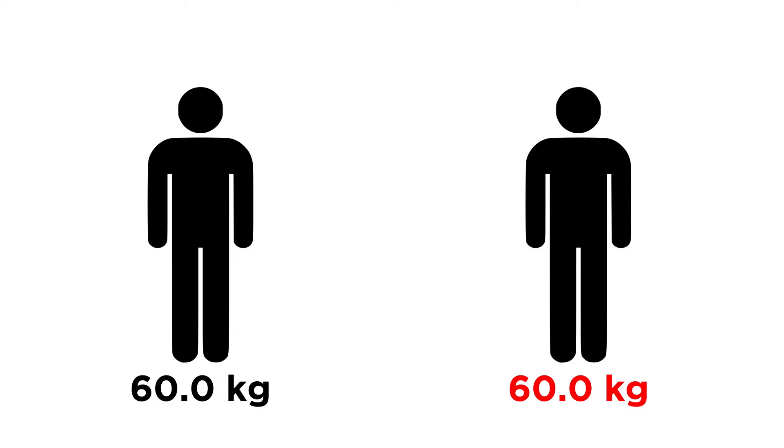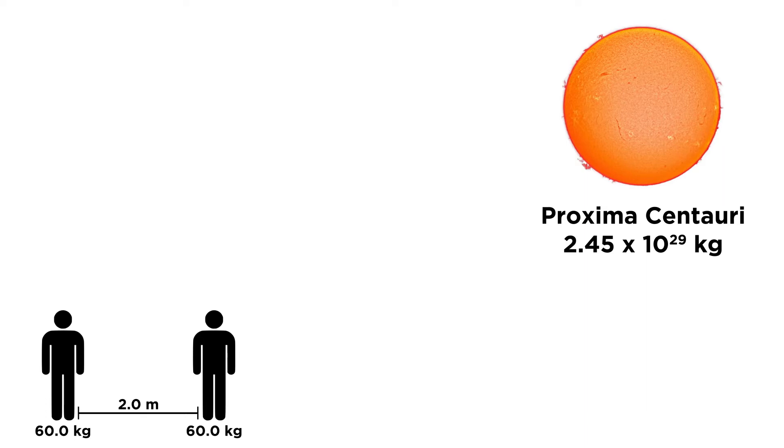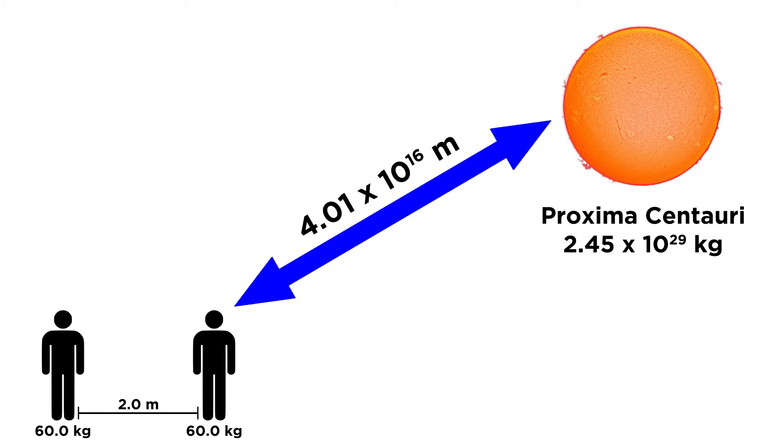You have a mass of sixty kilograms, as does your friend, who is sitting two meters away. Proxima Centauri has a mass of two point four five times ten to the twenty nine kilograms, and it is four point zero one times ten to the sixteen meters away.